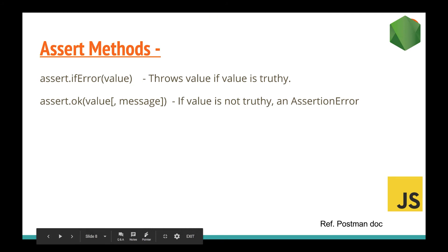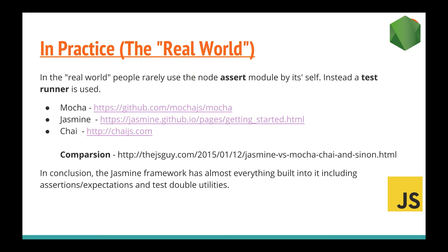Just to note: in the real world we don't use the bare assert module alone. We want a separate test runner that shows us test results — for example, out of 12 test cases, which ones passed and which ones failed. The three most commonly used JavaScript test runners are Mocha, Jasmine, and Jest. From my research across many websites, Jasmine is the most feature-complete and has almost everything you need.